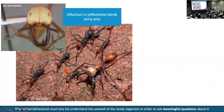Army ants — Eciton burchellii — are effectively blind. An ancient army ant evolved underground, lost its vision. But there was still a niche for army ants, so a set came back up to the ground without getting their vision back. They can smell really well and feel through touch. They go in long foraging columns and are voracious predators. There's a set of birds called antbirds and antshrikes that follow them around and pick off prey that the blind army ants have overwhelmed but aren't carrying. When you want to find the army ants, you listen for the antbird calls.